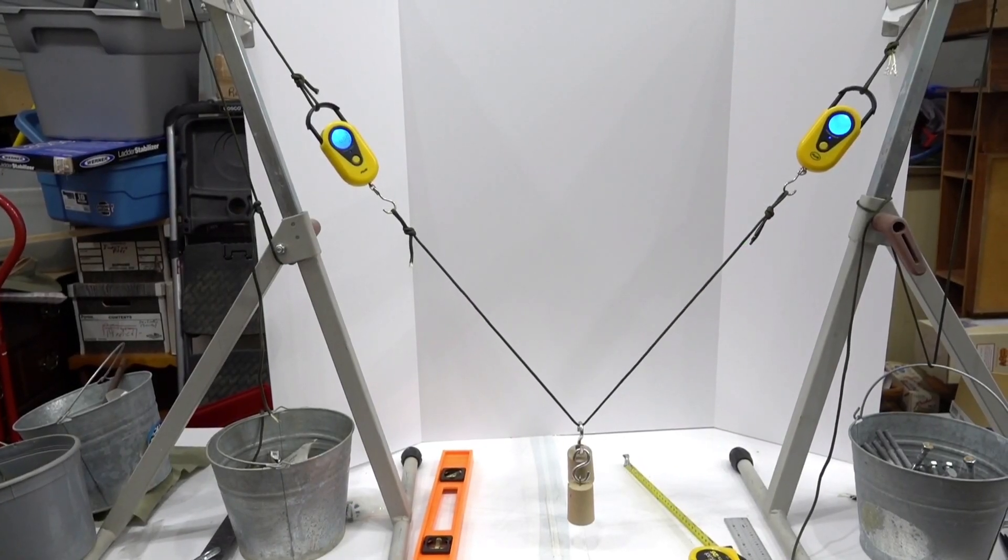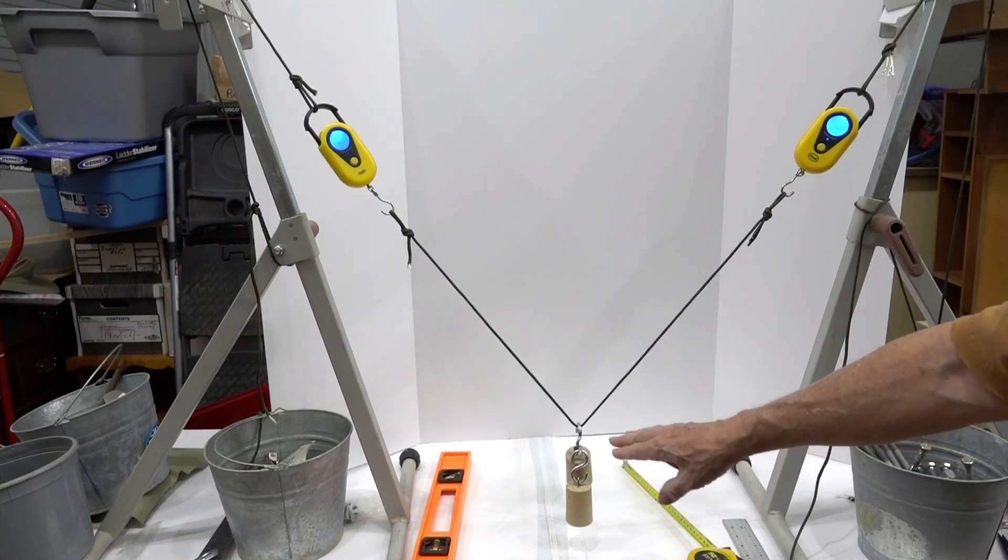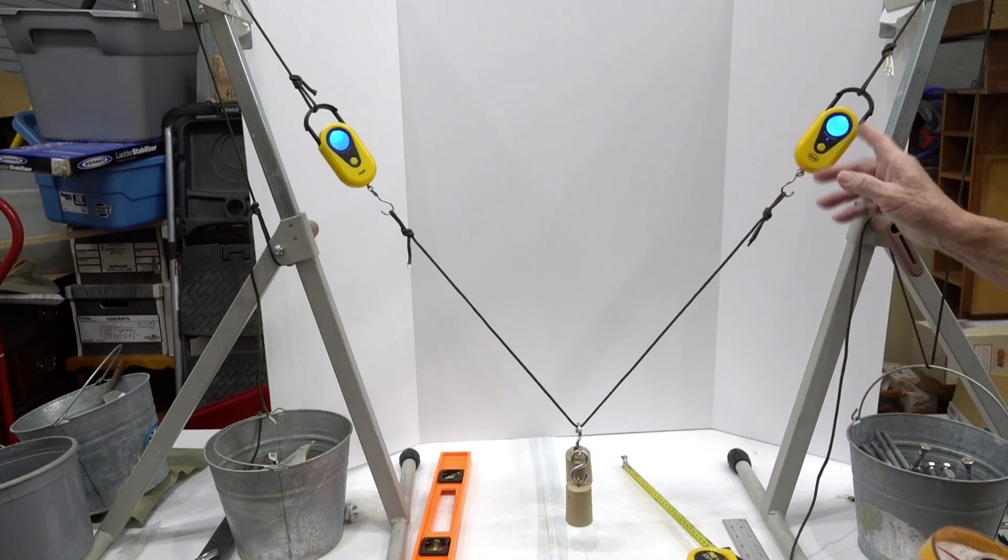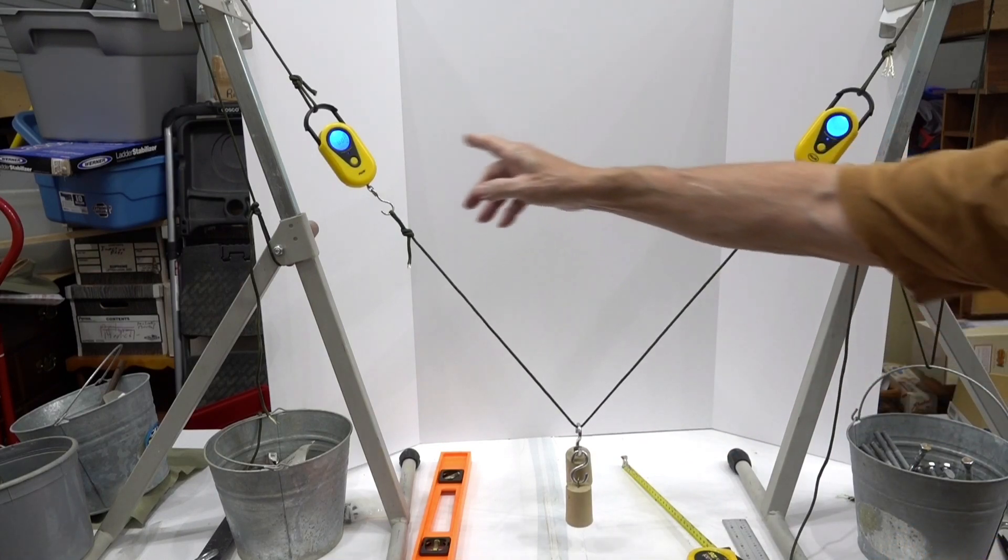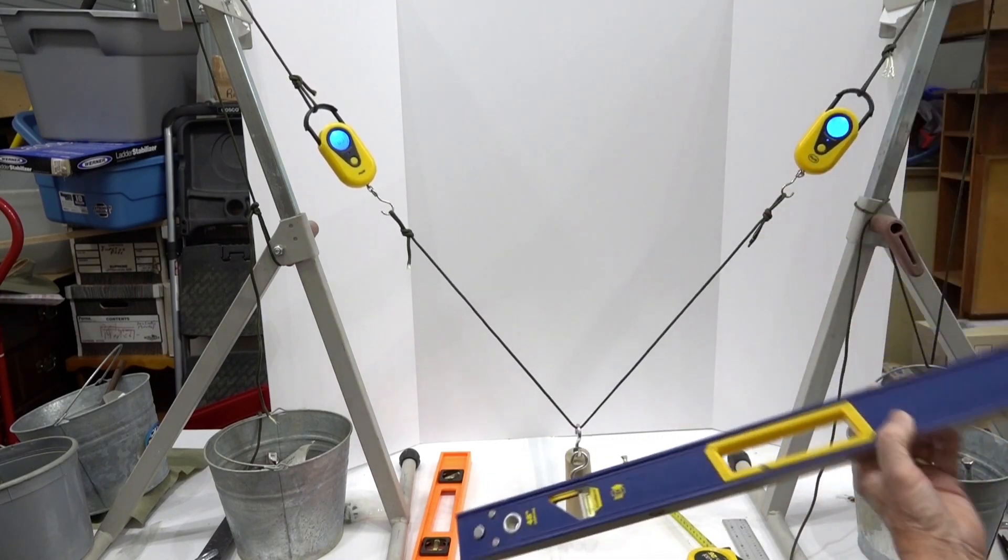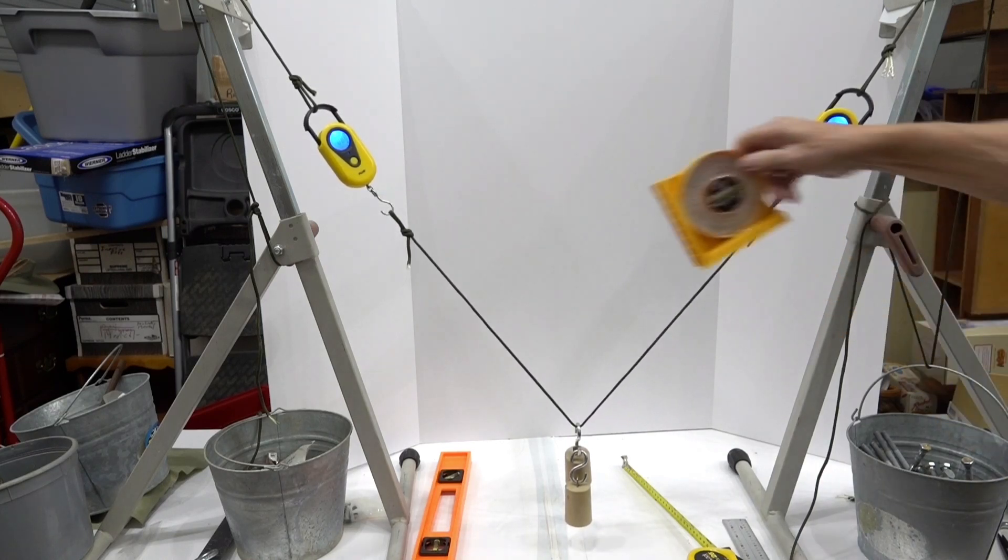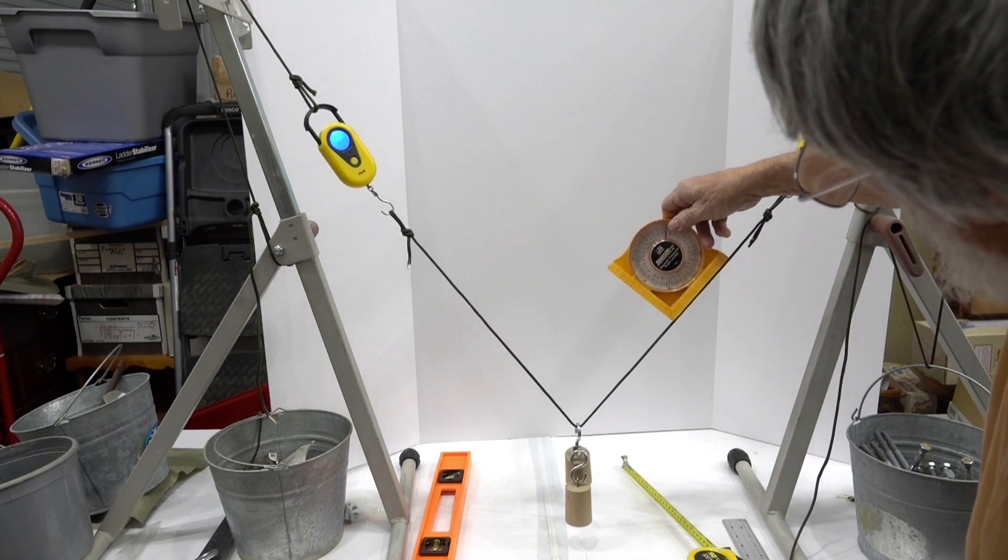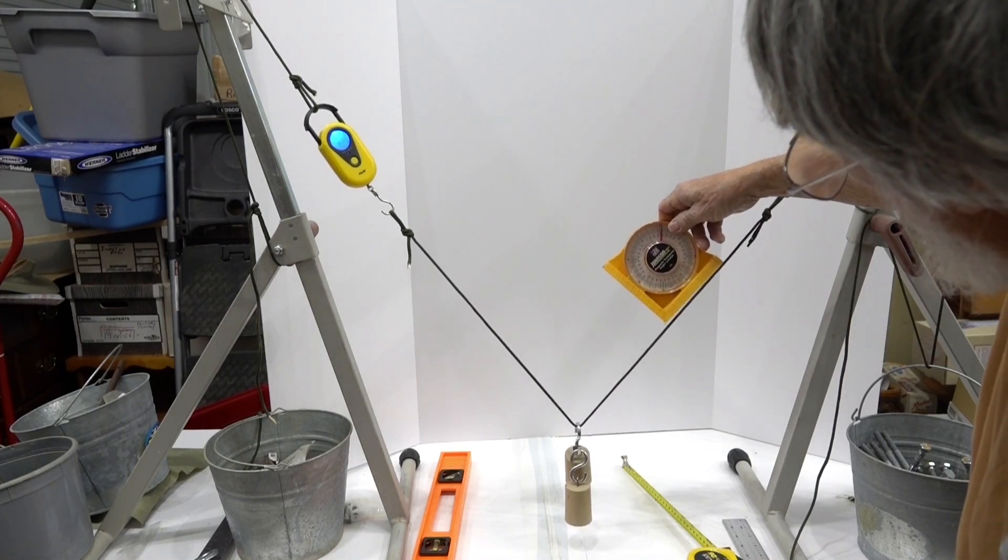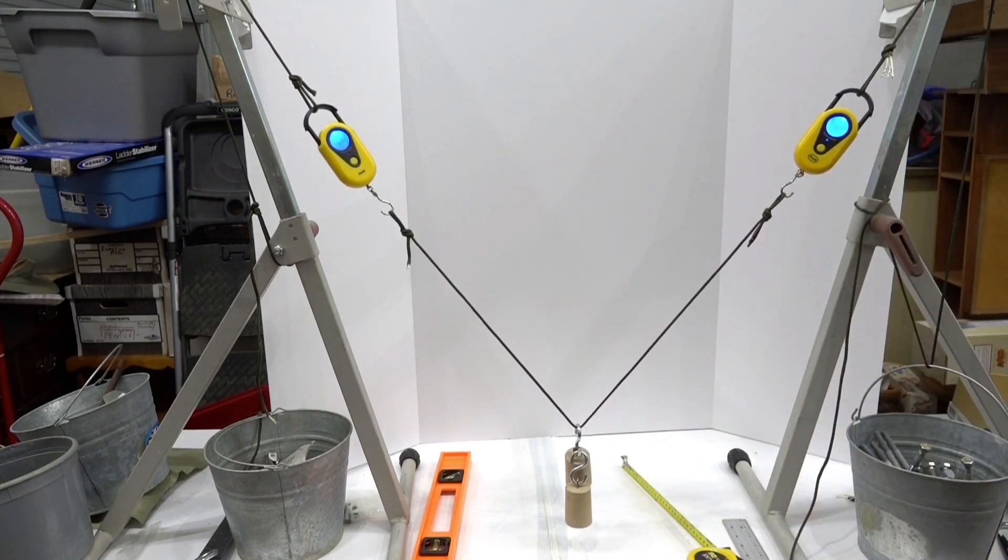Alright. We have a much steeper angle here. Still got the same 1.42 grams there. 0.88 there. 0.88 there. 0.88 there. Around 50 degrees that way. So, 53 using the straight line. Alright. Let's take a look. We'll calculate that and see how close we came.